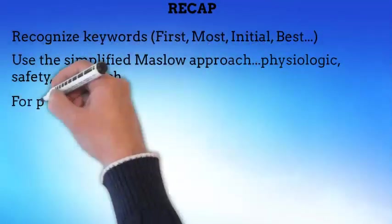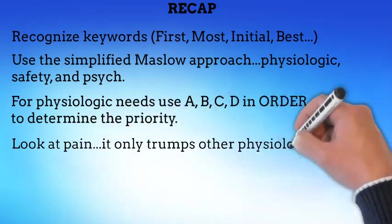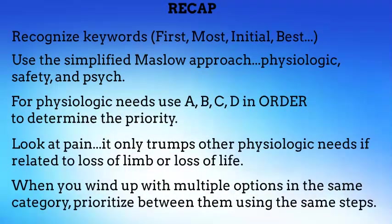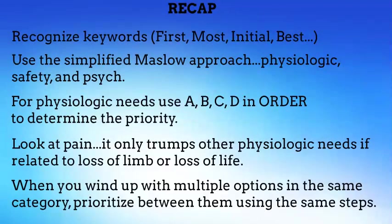Let's do a quick recap of what we learned in the previous video. First, you need to determine if a question is a priority question, so focus on those keywords. Words such as first, most, initial, and best are some of the words that will help you distinguish a priority question from something else. Once you have determined that it is a priority question, use the simplified Maslow approach, breaking the triangle down into just three segments: physiological, safety, and psych.